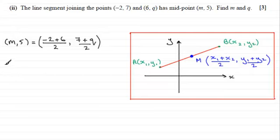Okay, so when we compare this, if we look at the x parts, we've got that m must be equal to -2 add 6 which is 4, divided by 2, which is 2.